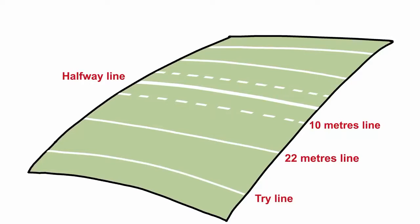On the try line are the rugby posts. Two vertical posts and a crossbar. The last line is the dead ball line and marks the end of the field.